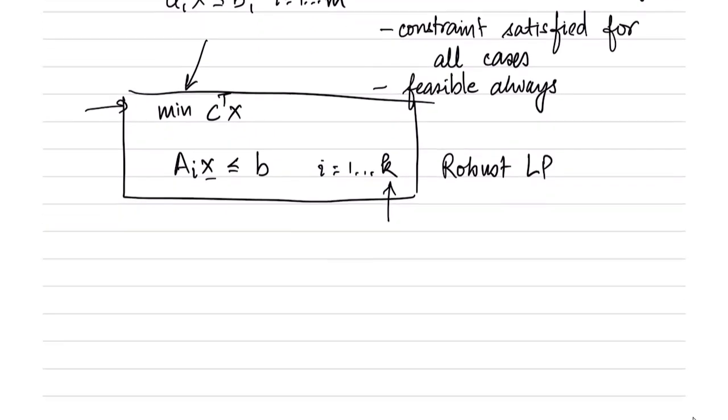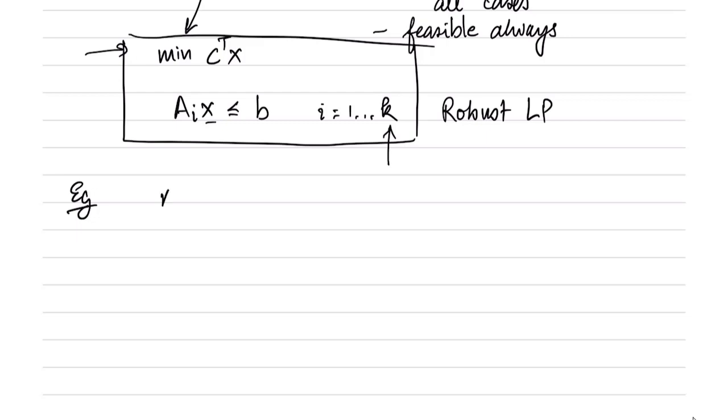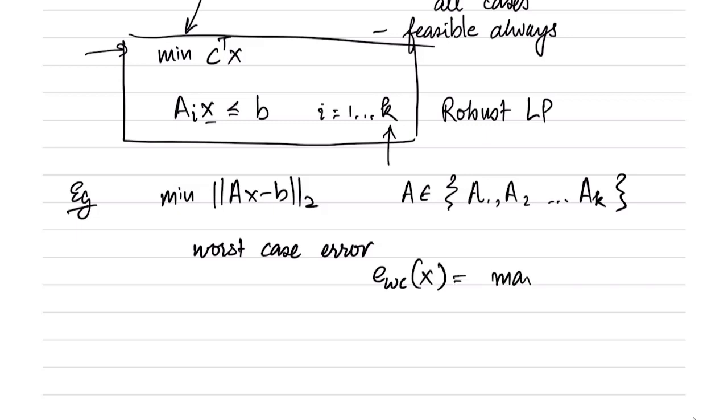Let's take another example, which is that of least squares in a similar setting. The least squares example would be we want to minimize the norm of Ax-B. But now we say that A could be any of these matrices A1, A2 till Ak. How do we deal with it here? In this case, we can look at the worst case error. The worst case error E_wc(x) is given by the maximum error that is incurred by any of these matrices. If I choose the worst possible matrix, that will incur the maximum amount of error. Instead of minimizing norm of Ax-B, I could minimize the worst case error with respect to x, which is the maximum of the norm of A_i x-B.